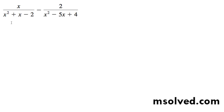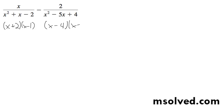We want to subtract these from each other. What we need to do is find a common denominator, so we factor these and find what terms we share and what we need. This becomes x plus 2, x minus 1. And this factors out to be x minus 4, x minus 1.